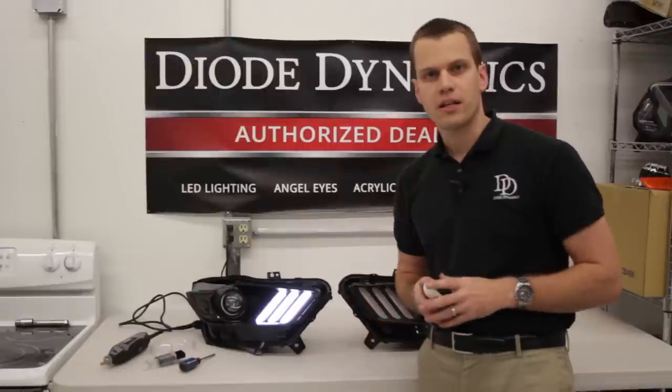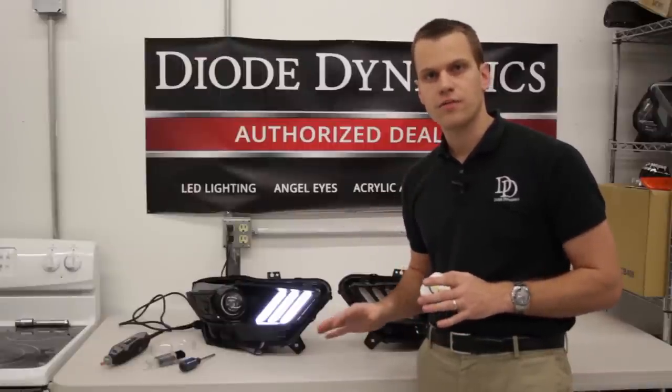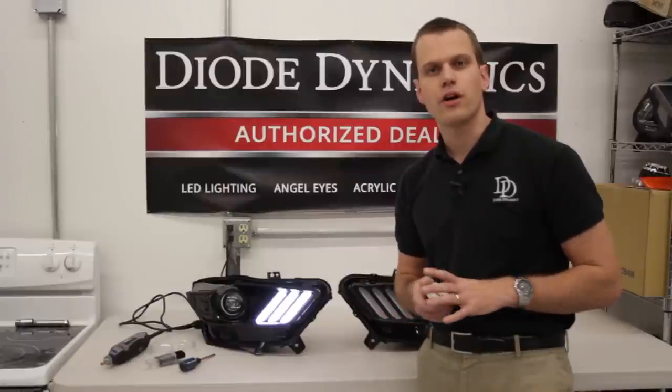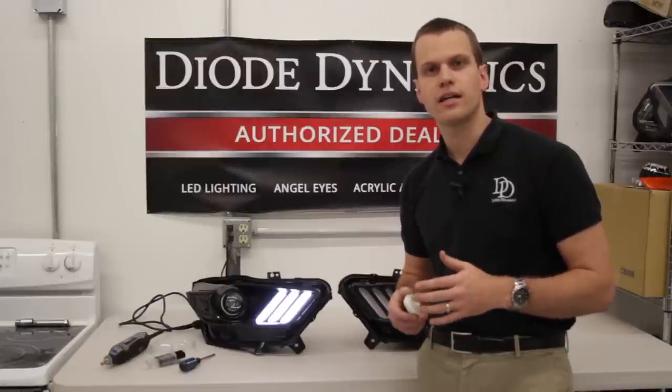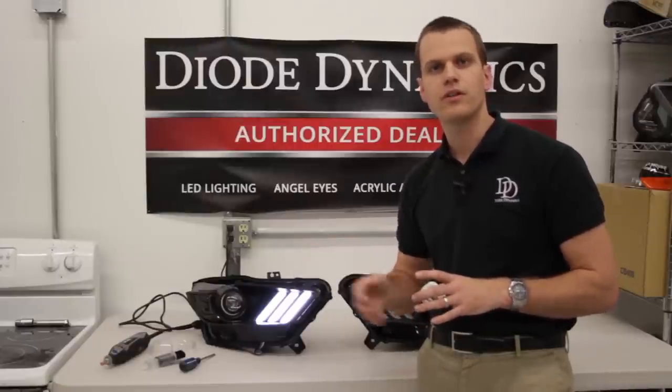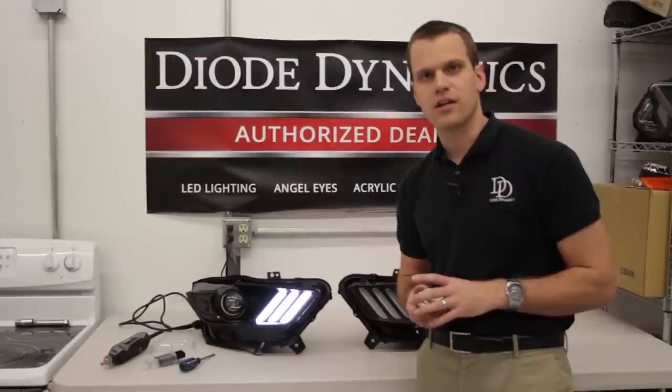Now we've already opened up the headlights, so we're going to start here and just show how the LED panels are installed. You can watch one of our other videos for general headlight opening. It's the same process as many other vehicles on the road. You're going to use an oven and some elbow grease to get these guys open.